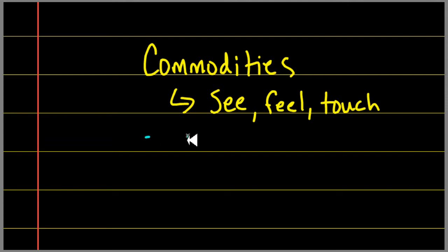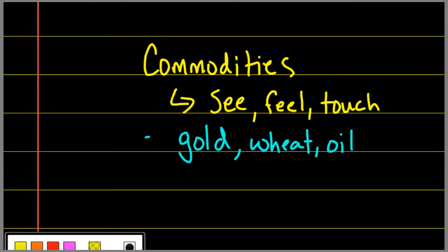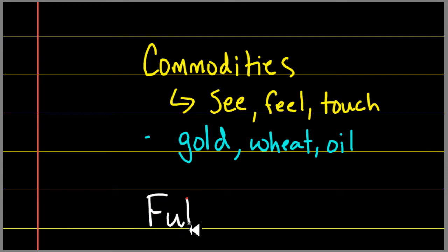Some of the examples that we've gone through have been gold, we've talked about wheat, oil, and those types of things. Now one of the things I want to make sure that we make a distinction between is commodities and the word futures. Oftentimes students will kind of combine them, and while they do kind of go together in some degrees, they really are two words.